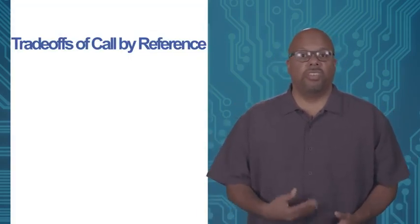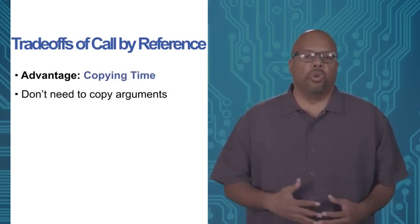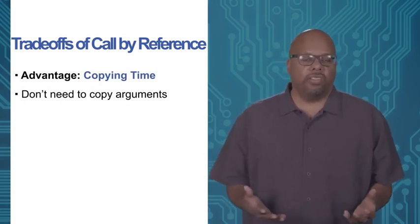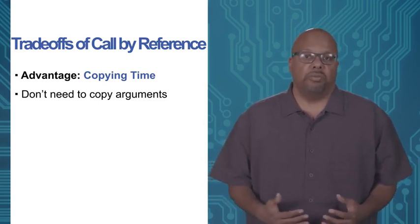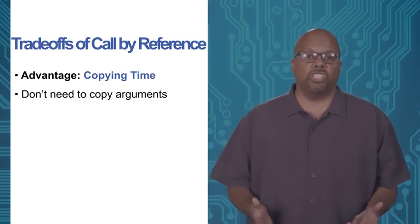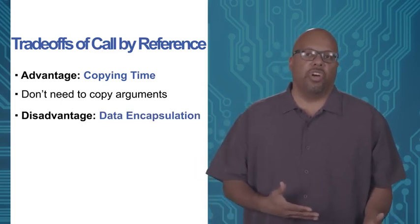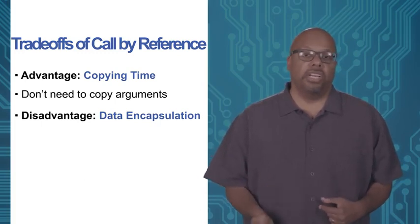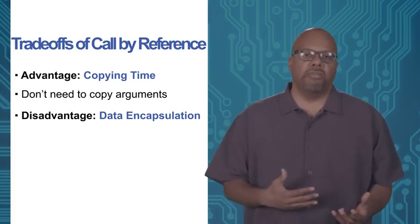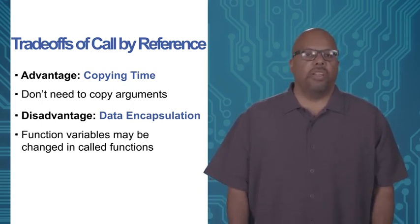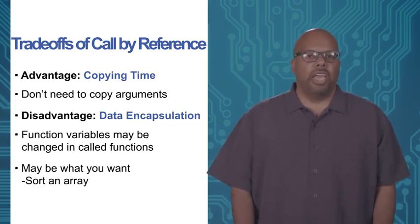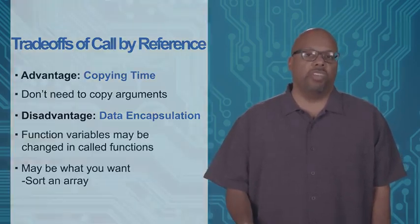So this is call by reference — you're not passing the actual data to the function, you're passing a reference to it. The tradeoffs are basically the opposite of call by value. The advantage is copying time: you don't need to copy the whole large argument — you only copy the pointer, which saves a lot of time for big structures. The disadvantage is data encapsulation: if there's a bug inside the called function, it can alter the variables inside the calling function. You only pass by reference if you definitely want the function to modify the variables in the calling function.